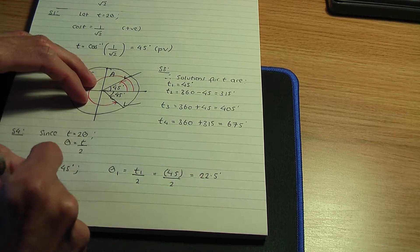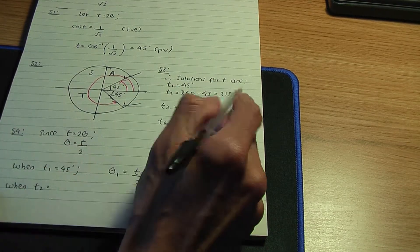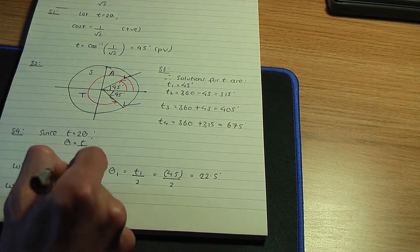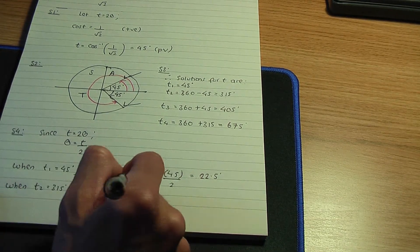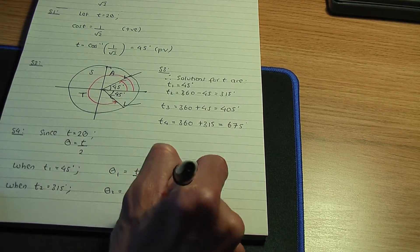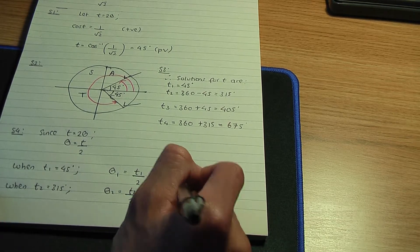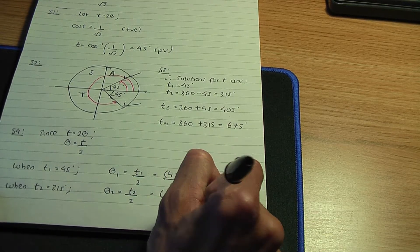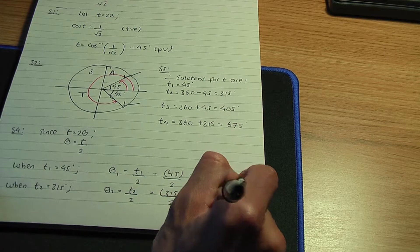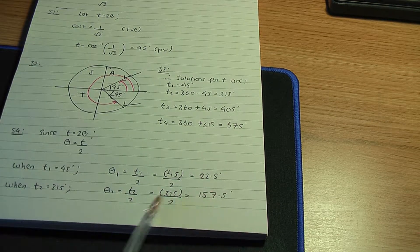Let's continue. When t2 is 315, θ2 will be t2/2, so that is 315 divided by 2, so that is 157.5. That is θ2.